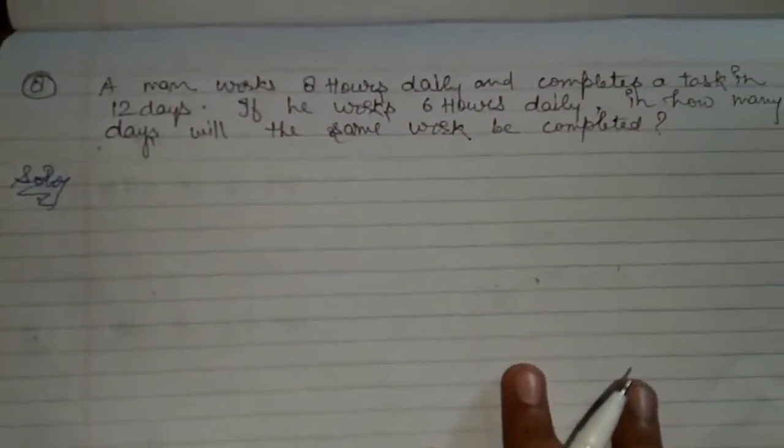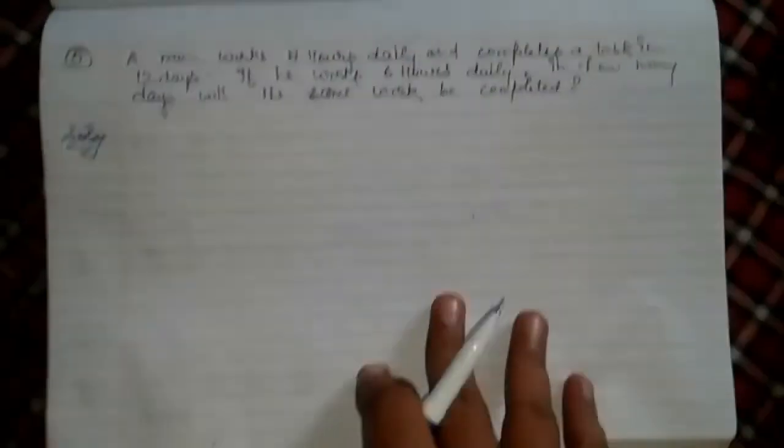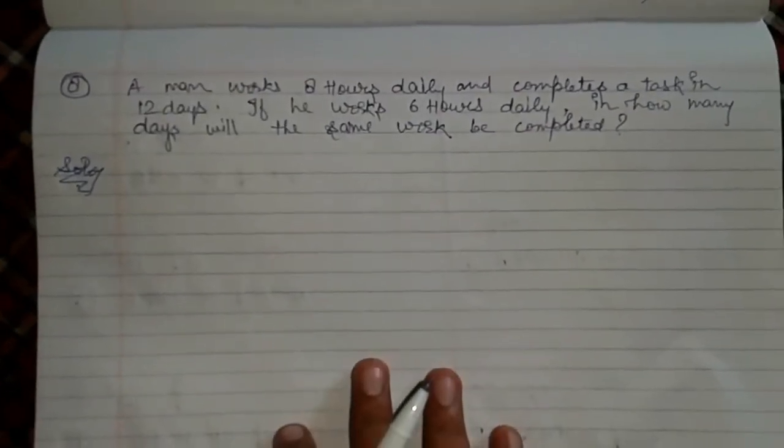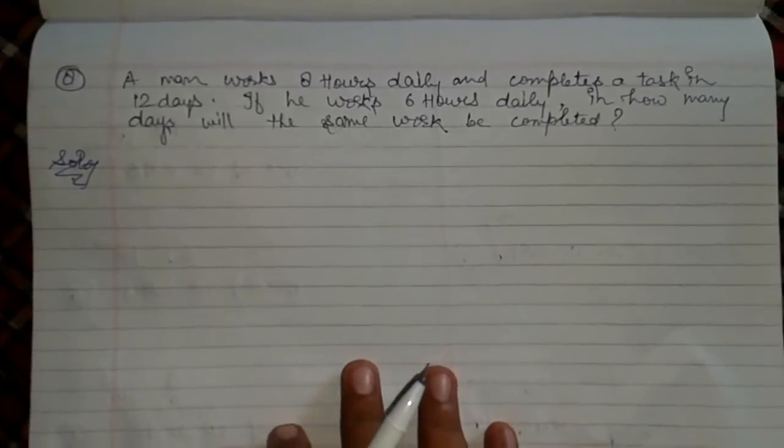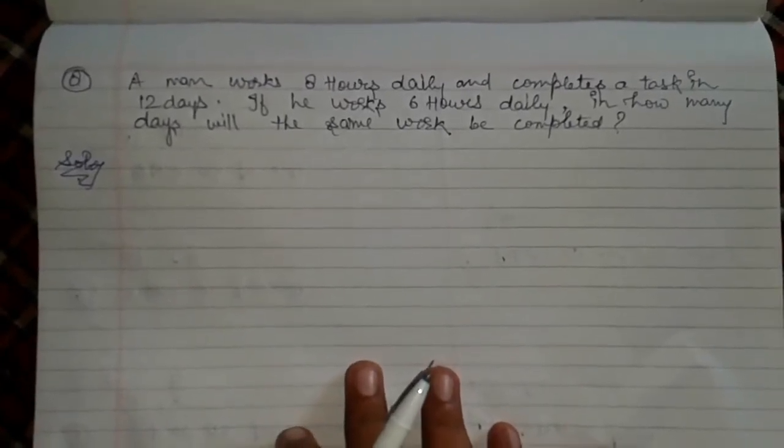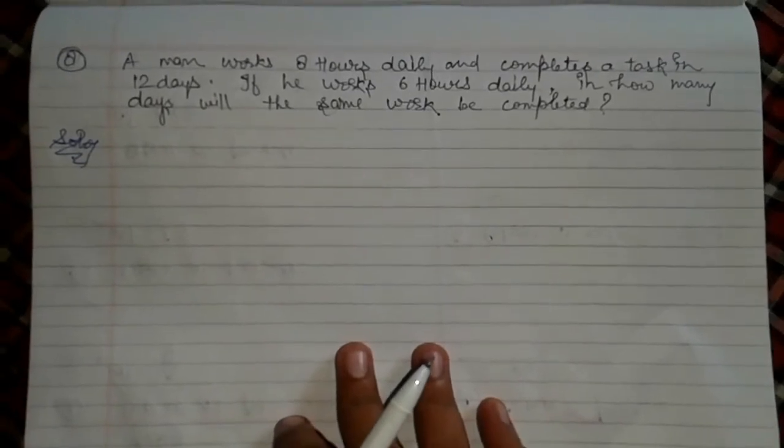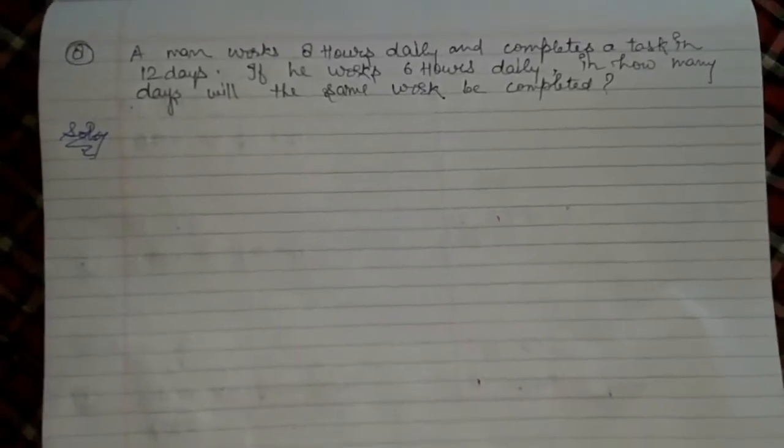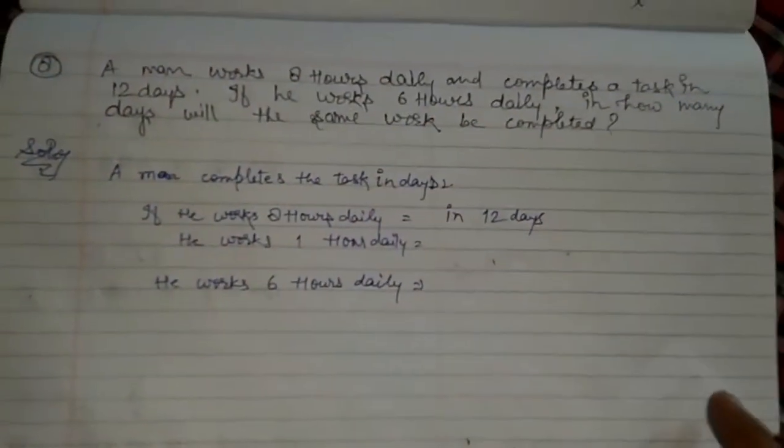Now, question 8 from your book. A man works 8 hours daily and completes a task in 12 days. If he works 6 hours daily, in how many days will the same work be completed?